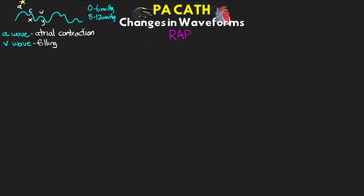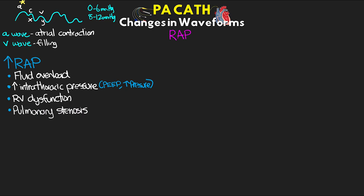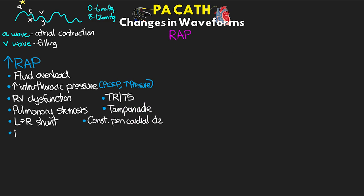Before discussing waveform changes, let's talk about reasons for increased right atrial pressure. Causes include fluid overload, high intrathoracic pressure such as PEEP or high pressure control ventilation, RV dysfunction, pulmonary stenosis, left-to-right shunt, tricuspid regurgitation, tricuspid stenosis, cardiac tamponade, constrictive pericardial disease, restrictive cardiomyopathies, cardiogenic shock, and obstructive shock. Many of these either prevent blood moving forward, cause backflow buildup, or create impediments to flow, leading to elevated right atrial pressures.